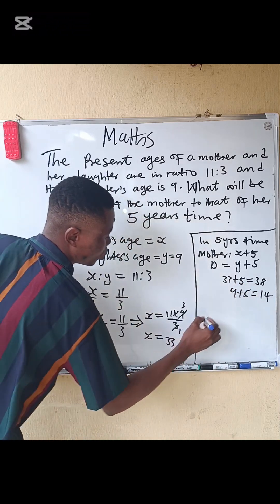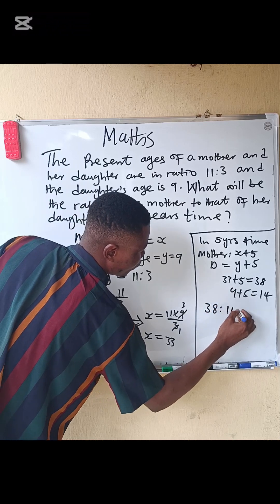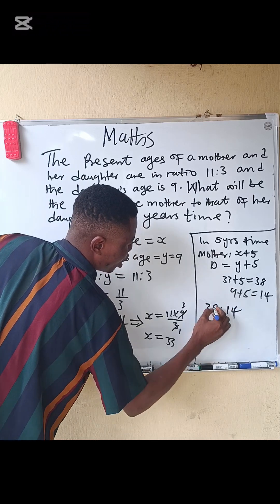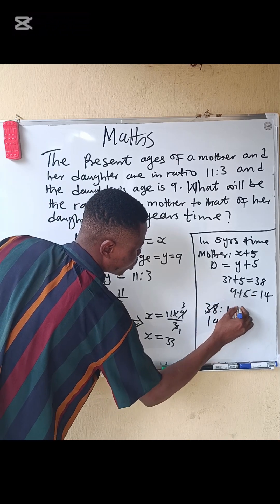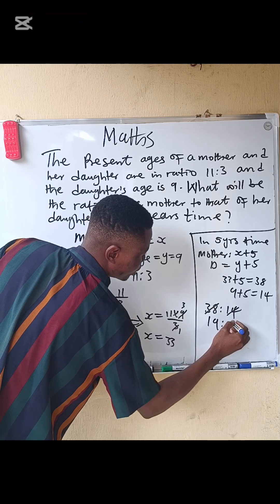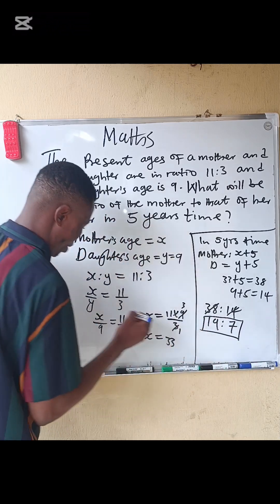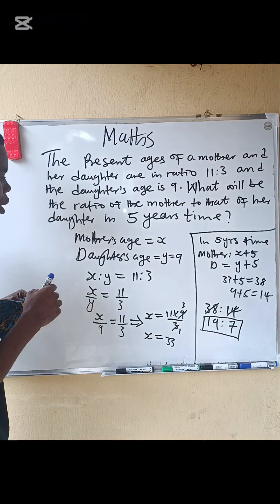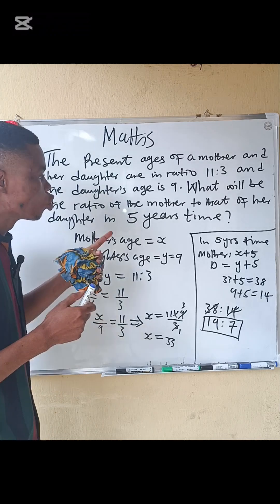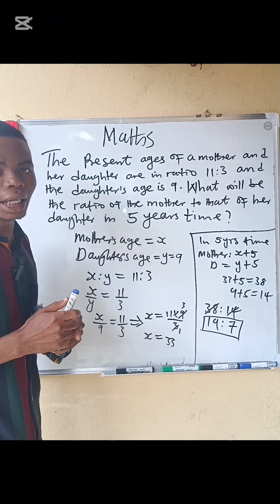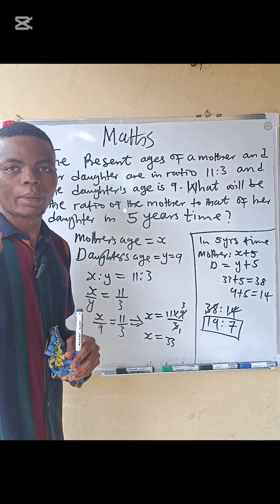Their new ratio becomes 38:14, which simplifies to 19:7. So 19:7 will be the ratio of their ages in five years time. That is the answer.